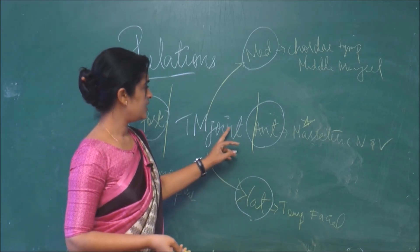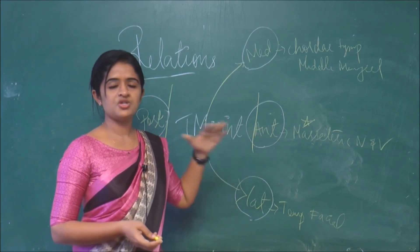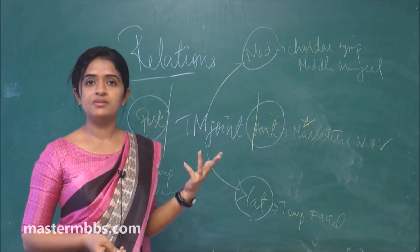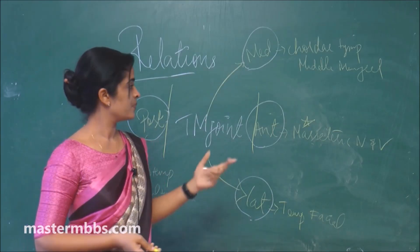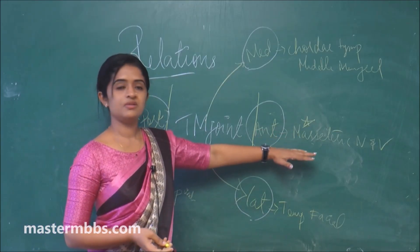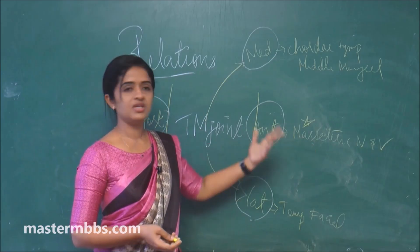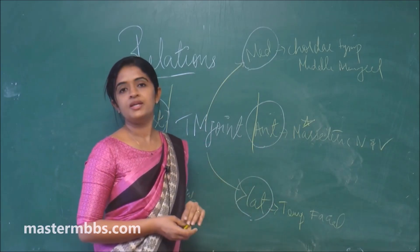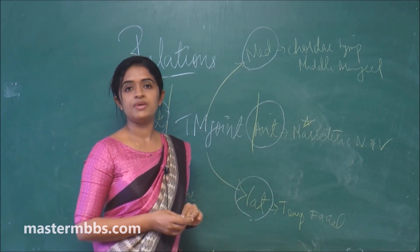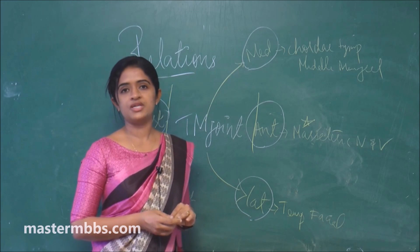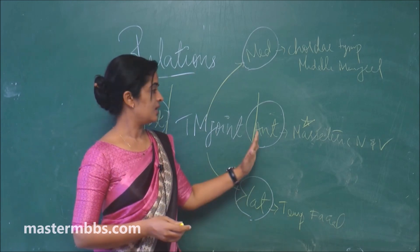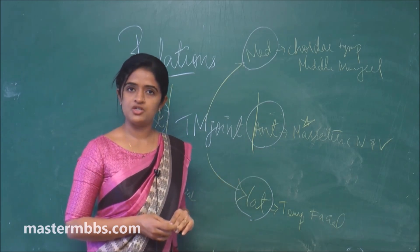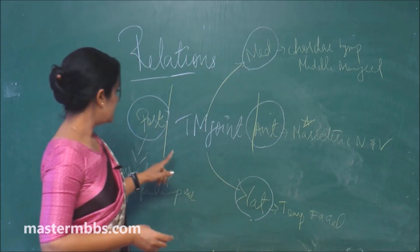What about the anterior relation? For the anterior relation, again you have to think about a nerve and a vessel. Here it is very easy — the nerve and vessel have the same name: masseteric. The masseteric nerve and vessels come as the anterior relation of the temporomandibular joint.